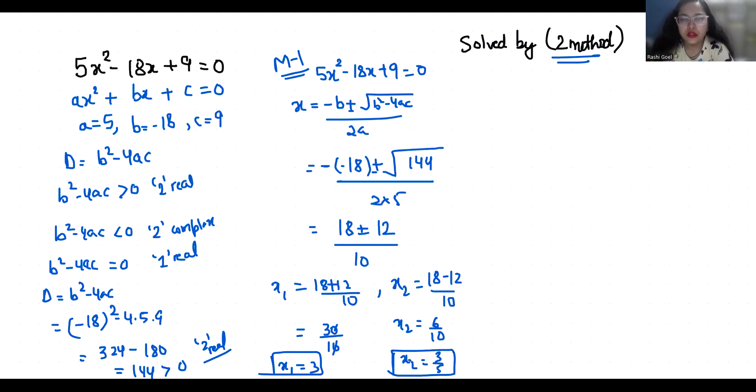Method 2. 5x²-18x+9=0. I am going to use middle term split method and write this 18x as 15x minus 3x plus 9 equals to 0.